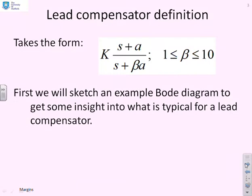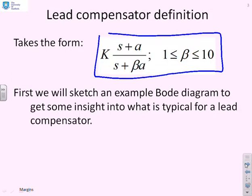What is the definition for a lead compensator? It's given as K times (S plus A) over (S plus beta A). Specifically, we need to notice that beta is between 1 and 10, so in other words the pole has a larger magnitude than the zero.